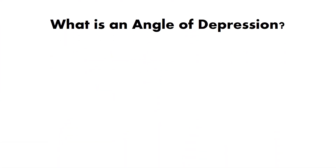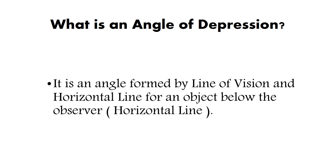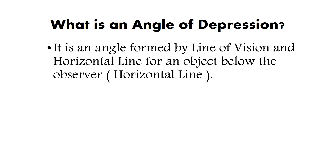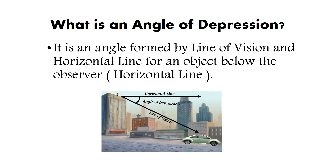So what is an angle of depression? It is the angle formed by the line of vision and the horizontal line for an object below the observer.